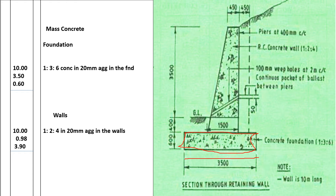We are going to take the quantities in two parts: the base, which is the foundation, and then the wall. For the foundation, we need the length which is 10 meters, the width which is 3.50 meters, and the depth which is 0.60 meters. The concrete mix used in the foundation is 1:3:6 in 20mm aggregates.